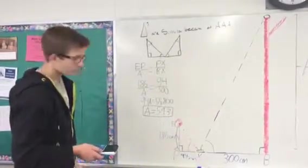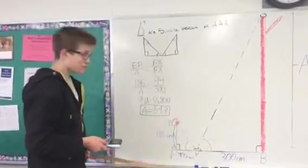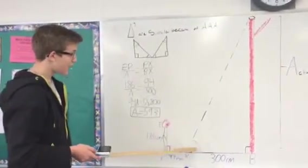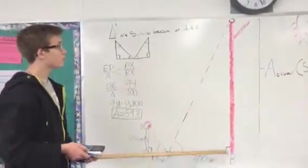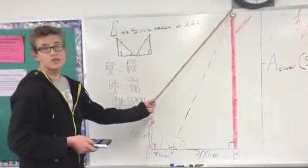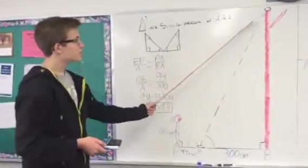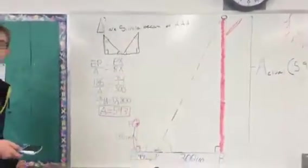The same as this side, where angle X plus angle B equals this angle right here. These angles being the same prove that these triangles are similar.